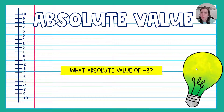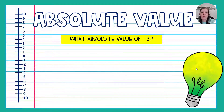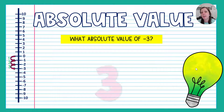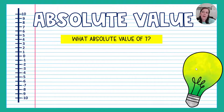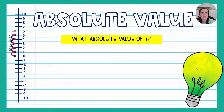If I asked you the absolute value of negative three, that's three spaces away from zero, so the absolute value of negative three is three. What about the absolute value of seven? How far is seven from zero? It's seven spaces, so the absolute value of seven is seven.